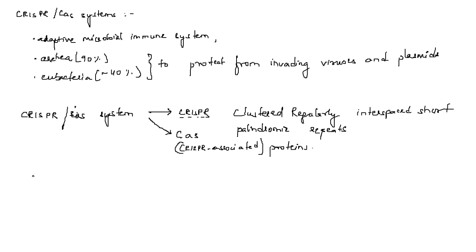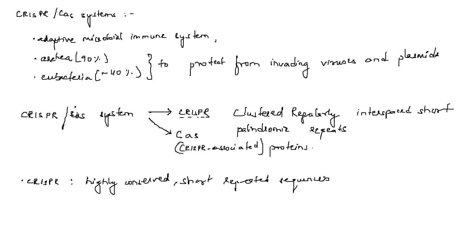CRISPR consists of highly conserved short repeated sequences, which are separated by similarly sized short spacer sequences.